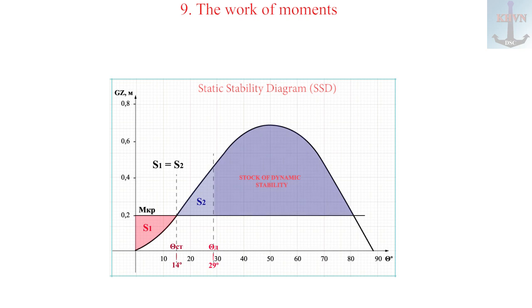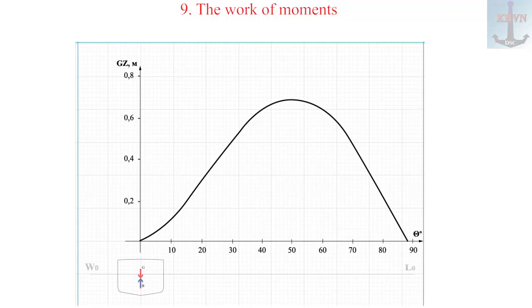The area under the static diagram is the stability margin or the potential for the work of the restoring moment. Part of this area work was eaten by the healing moment, but the remaining segment on the right is the reserve of dynamic stability, the potential of the restoring moment.